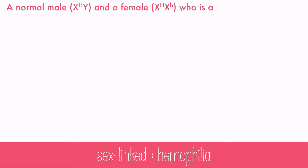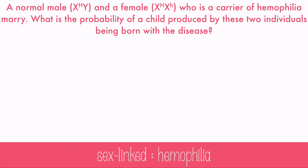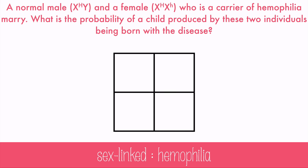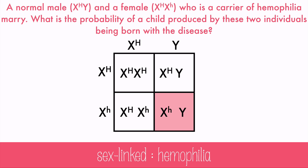A normal male and a female who is a carrier for hemophilia marry. What's the probability of a child being born with the disease? This Punnett square will show us the probability of having males and females and whether they'll have the trait. Remember, you put the trait as a superscript, and the Y will not carry the trait because it only exists on the X chromosome. Having at least one normal allele makes the person normal, so all females are okay. But since males only get one X chromosome, there's a 50% chance among males of having hemophilia — a 25% chance overall.